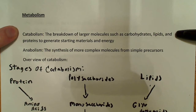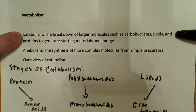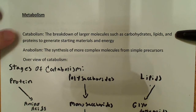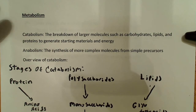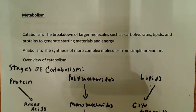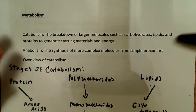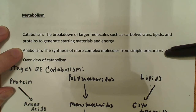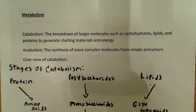These are more formal definitions, and it might be the way you'd want to write it on an exam. But if you remember just breakdown and synthesis, you'll probably be okay. Catabolism is the breakdown of larger molecules such as carbohydrates, lipids, and proteins to generate starting materials and energy. Anabolism is the synthesis of more complex molecules from simple precursors.